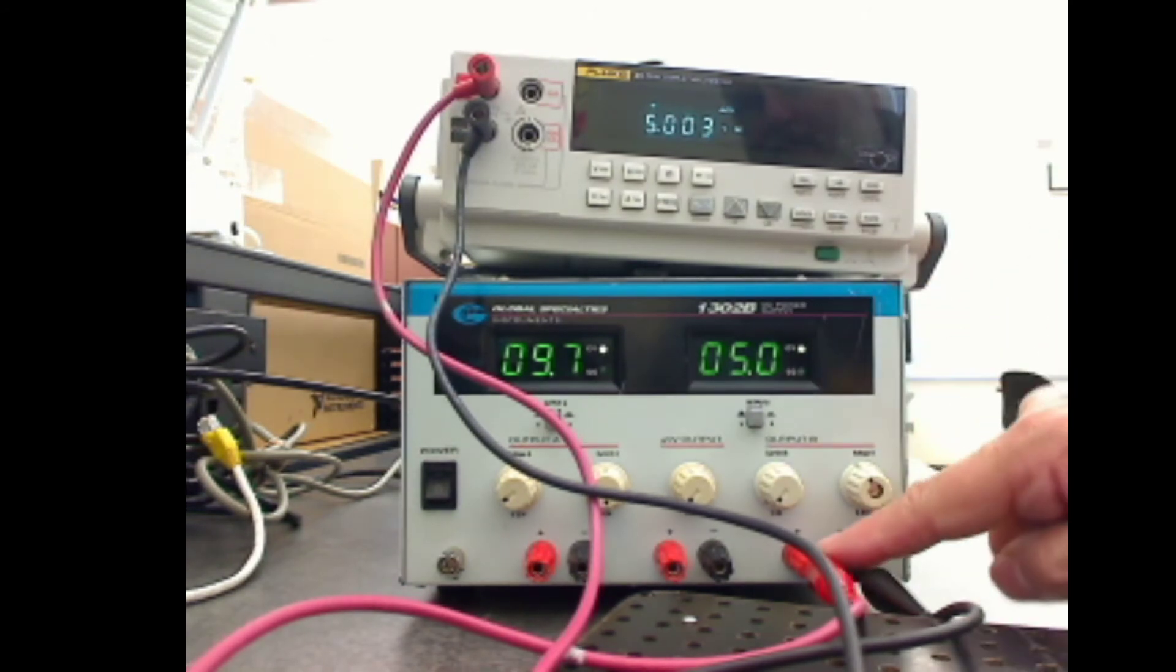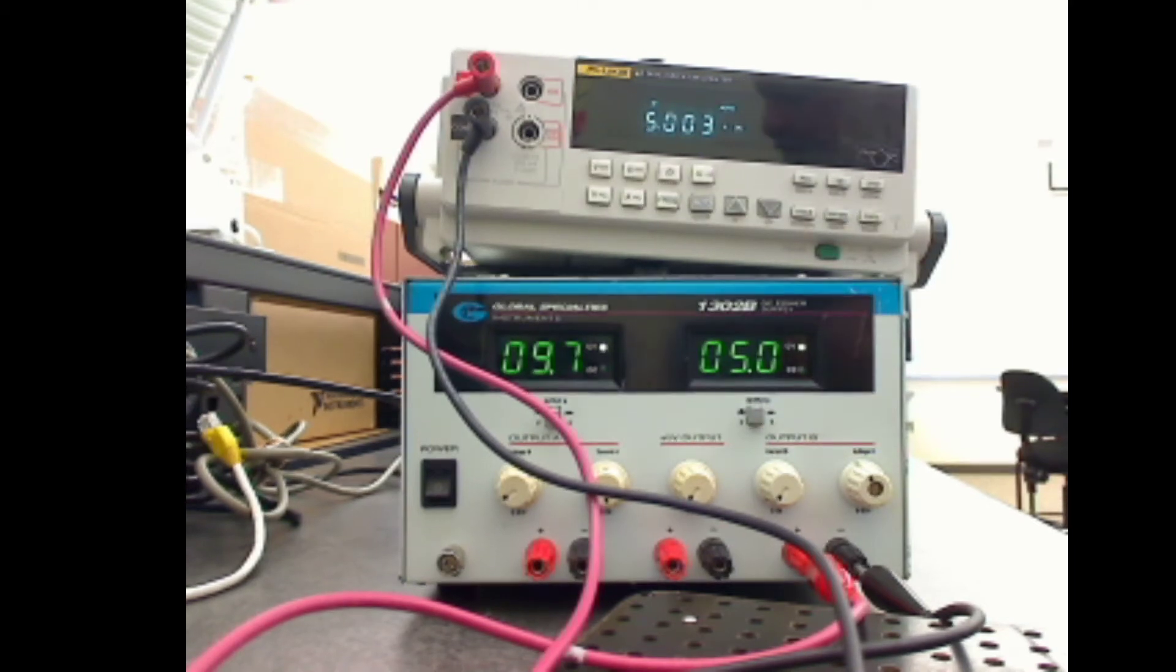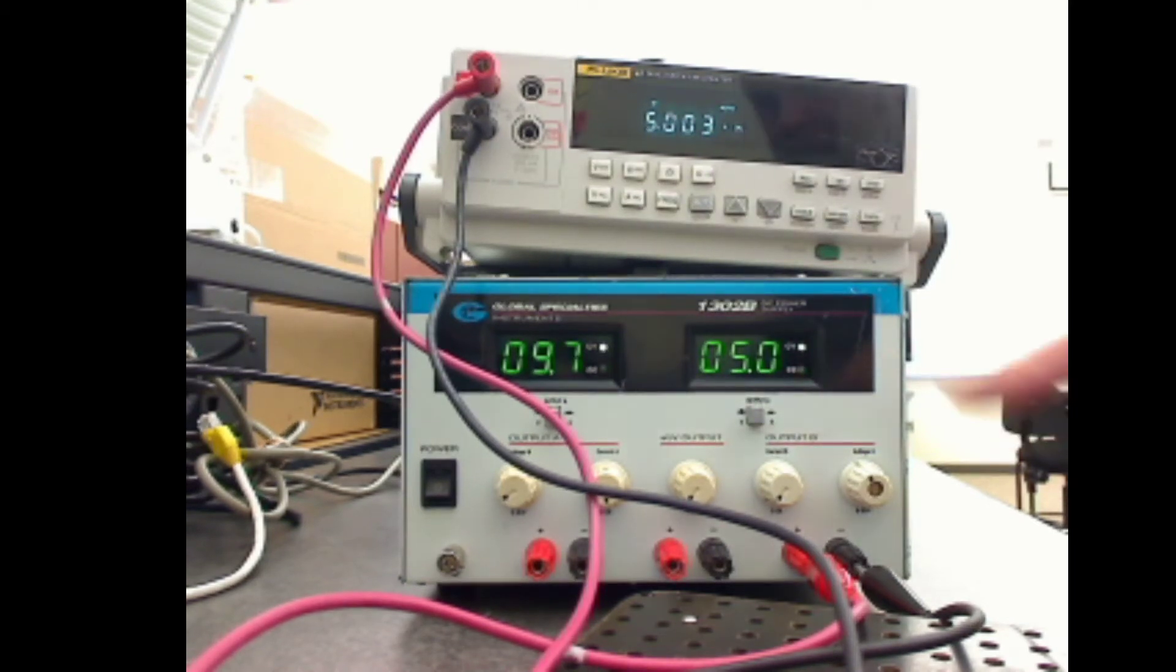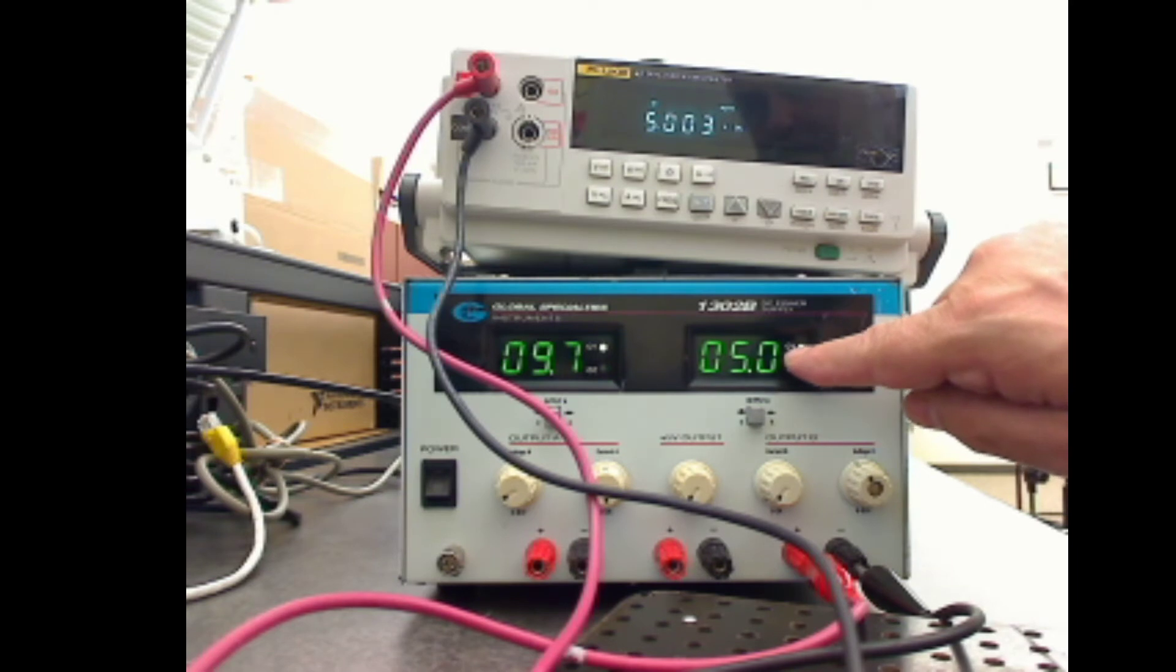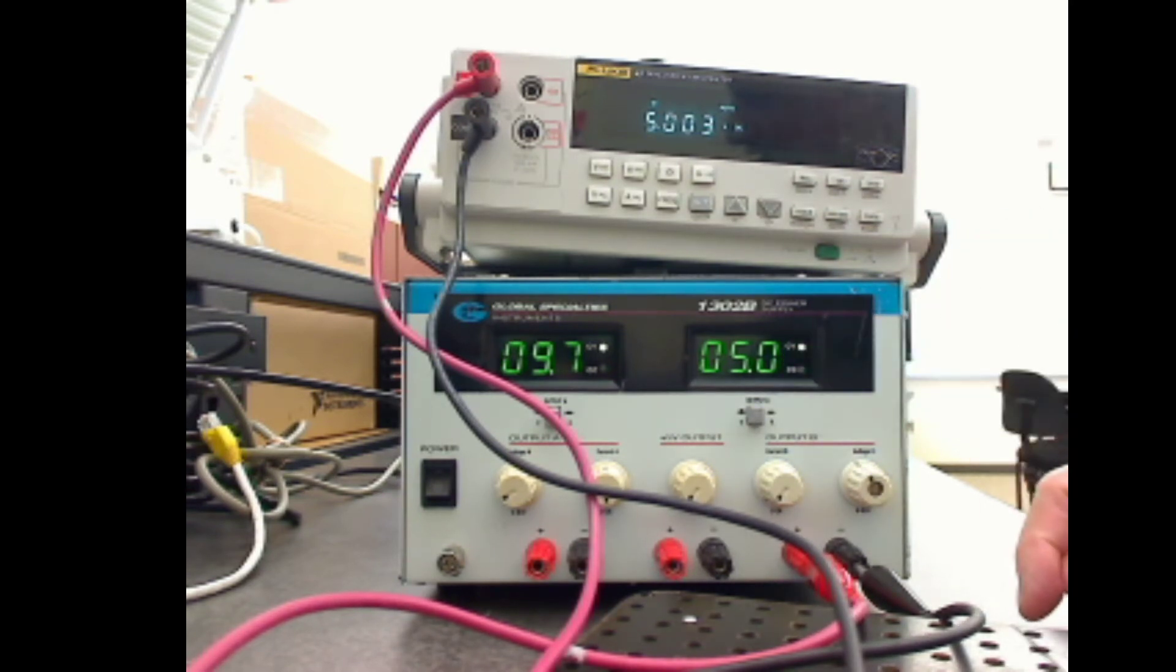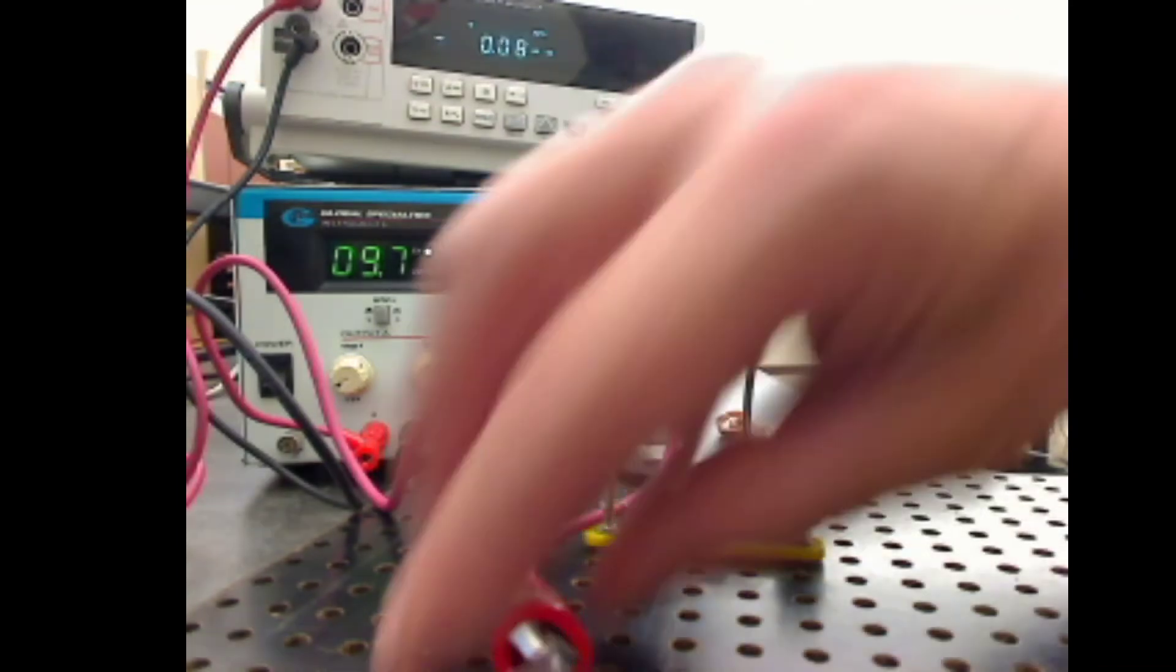If I remove the short, though, the voltage actually goes back up to the constant voltage. So you always want to make sure that your voltage light stays on, your constant voltage CV light stays on.